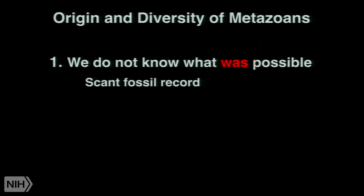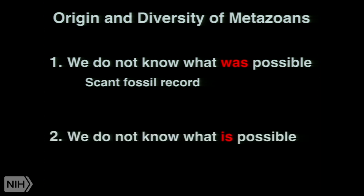Here's the problem: because we have this very scant fossil record, we may never know what was possible out there. What we have left is the life forms we have covering the planet at the present time. This brings me to the second part about the diversity of metazoans, which is the thesis that we do not know what is possible. We think we do, but we don't really know. So I'm going to give you a couple of examples about what I mean by this.